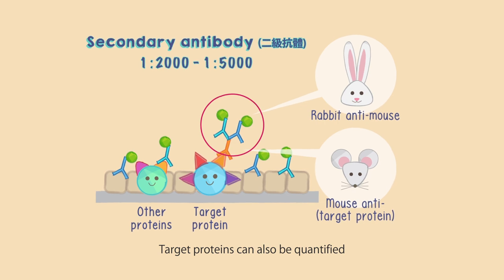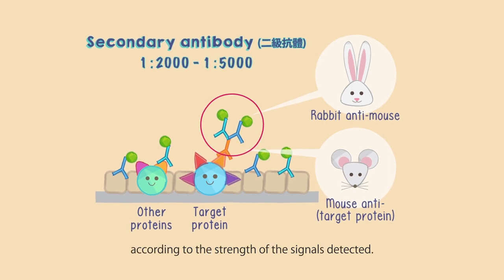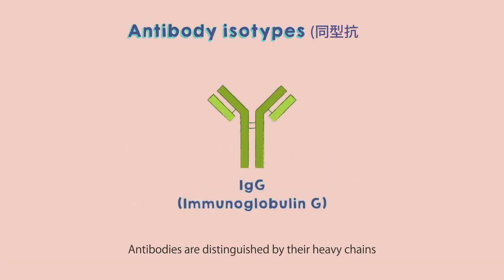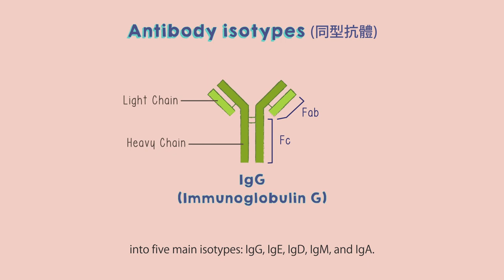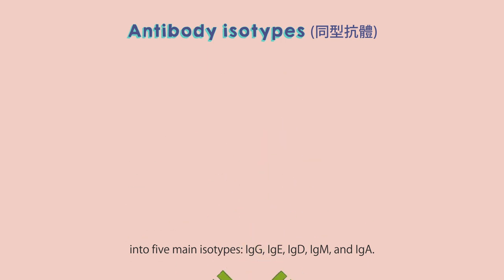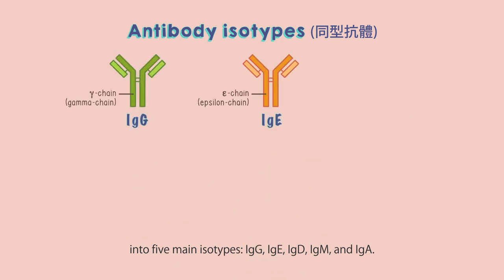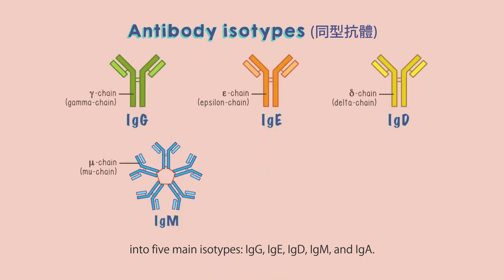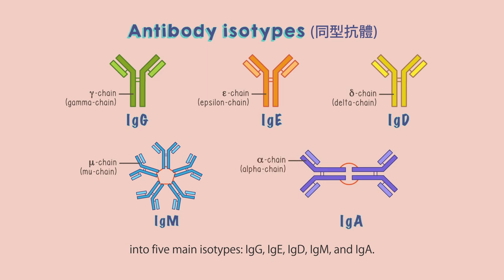Target proteins can also be quantified according to the strength of the signals detected. Antibodies are distinguished by their heavy chains into five main isotypes: IgG, IgE, IgD, IgM, and IgA.